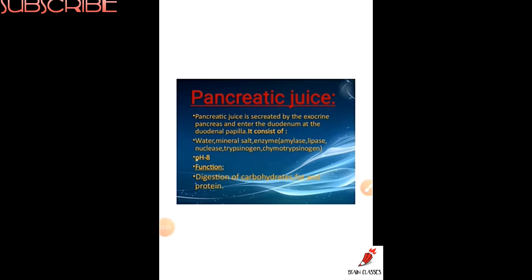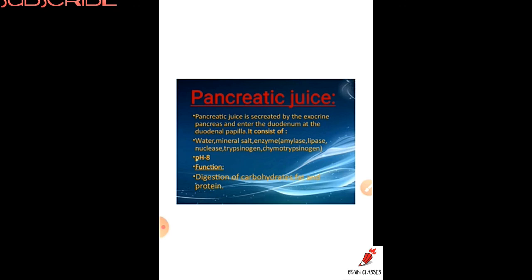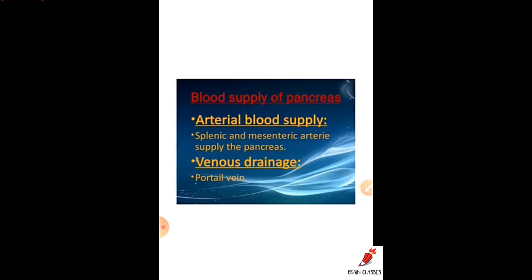The pancreatic juice is secreted by the exocrine pancreas and enters the duodenum at the duodenal papilla. It consists of water, minerals, salts, and enzymes such as amylase, lipase, nuclease, trypsinogen, and chymotrypsinogen. The pH of the pancreatic juice is about 8. The important functions of pancreatic juice are the digestion of carbohydrates, fats, and proteins.